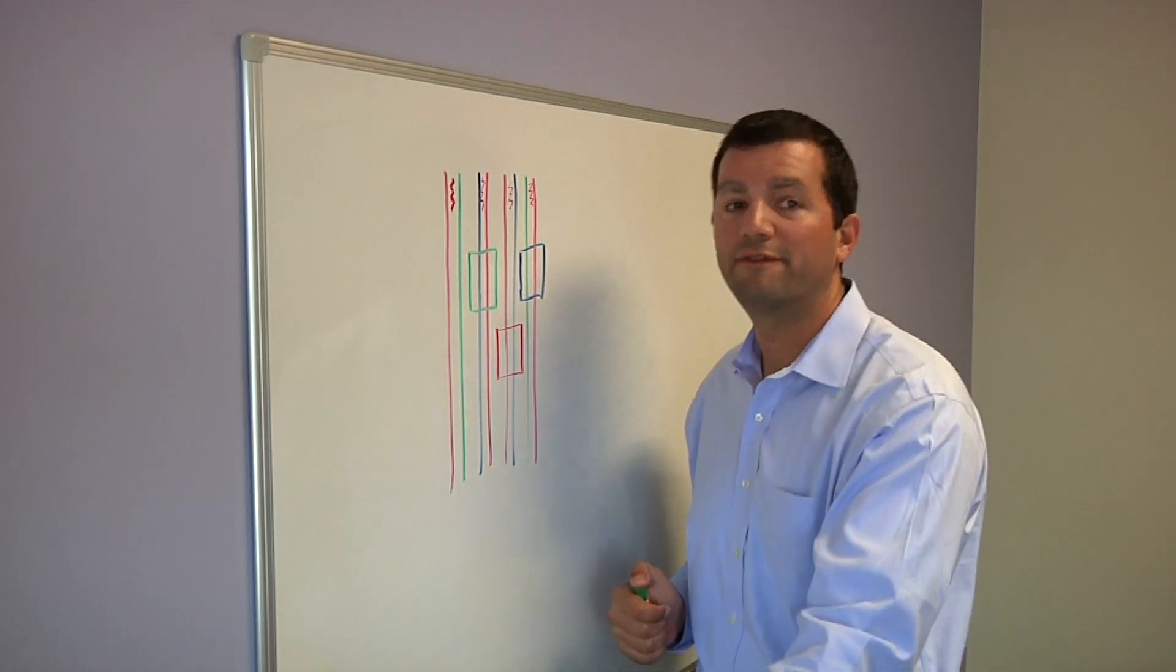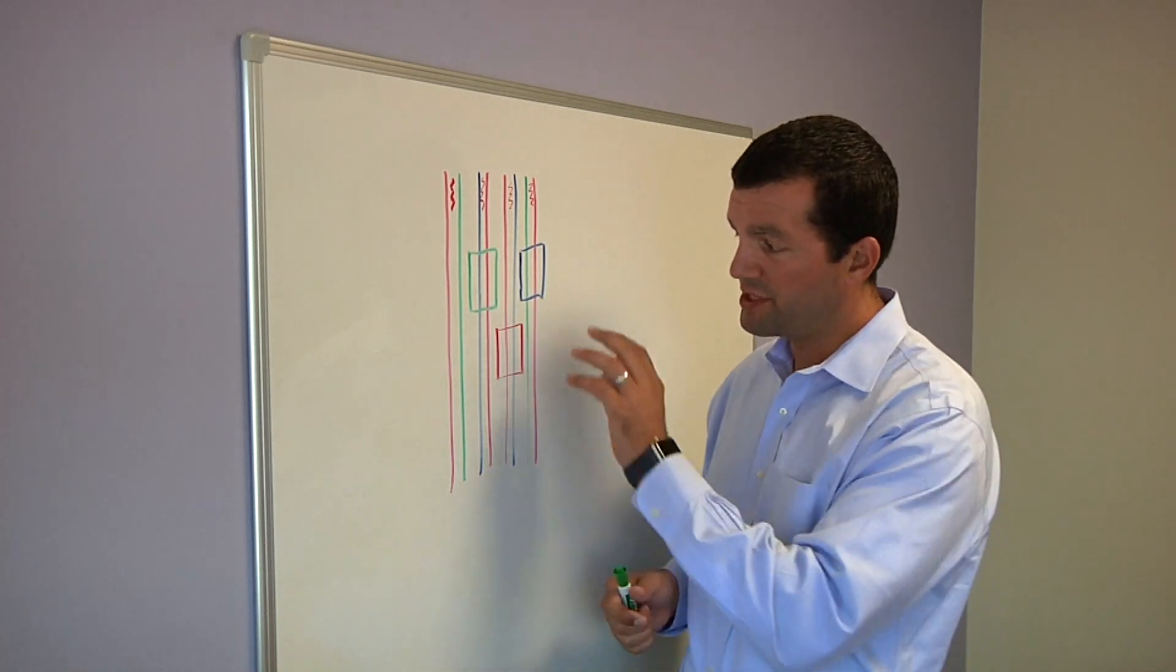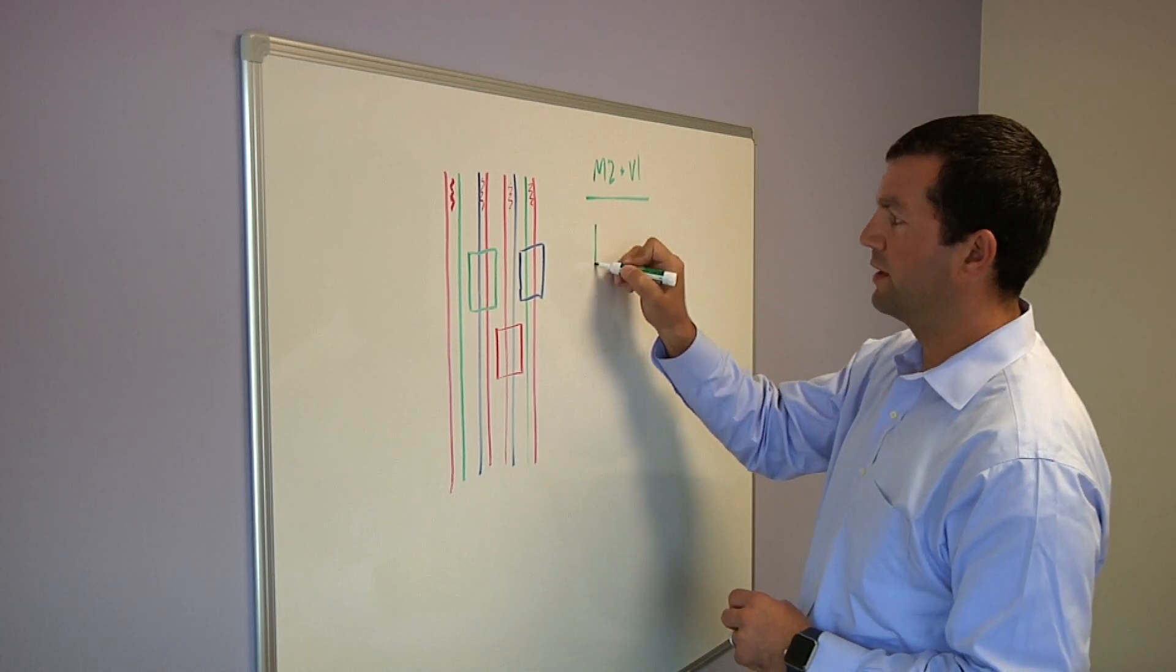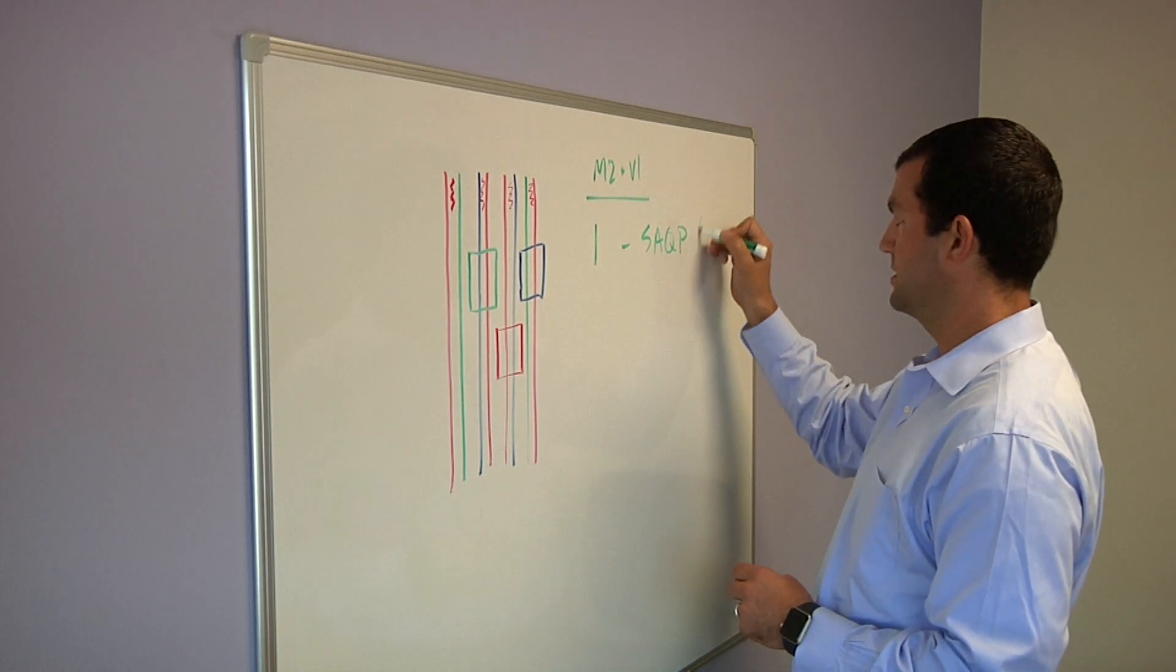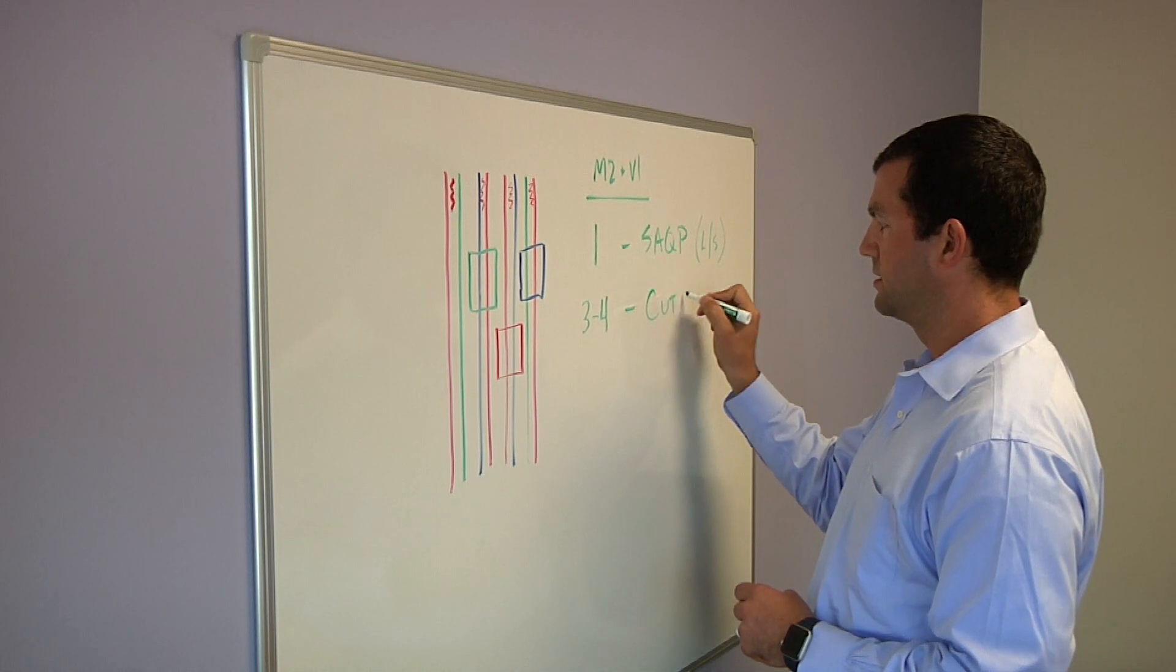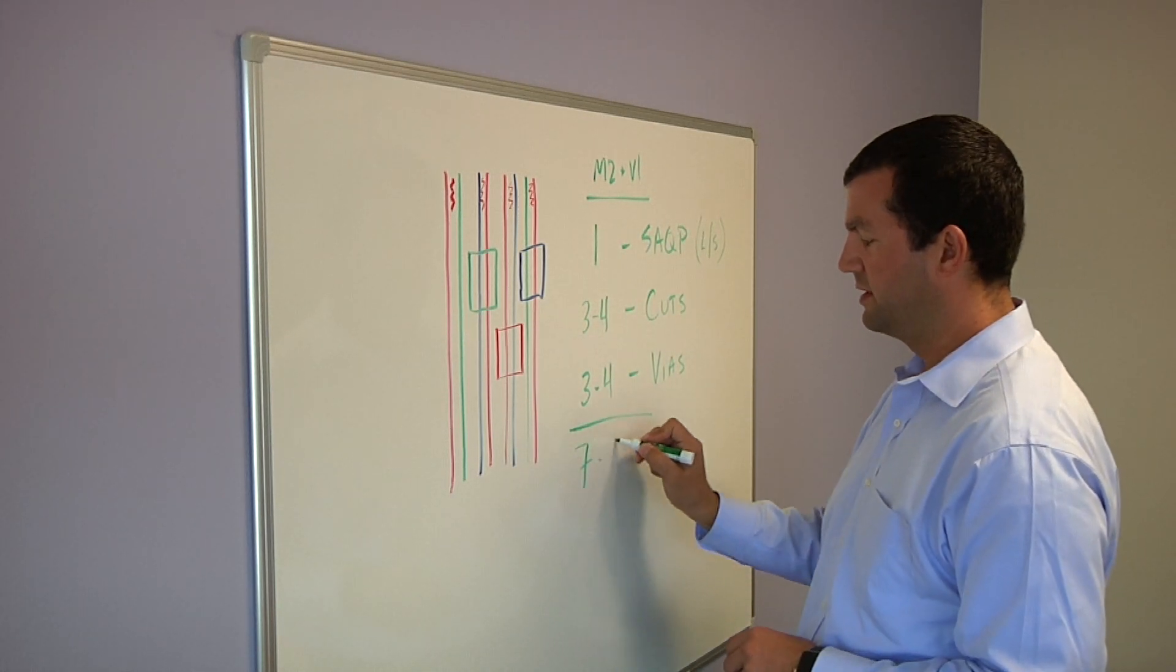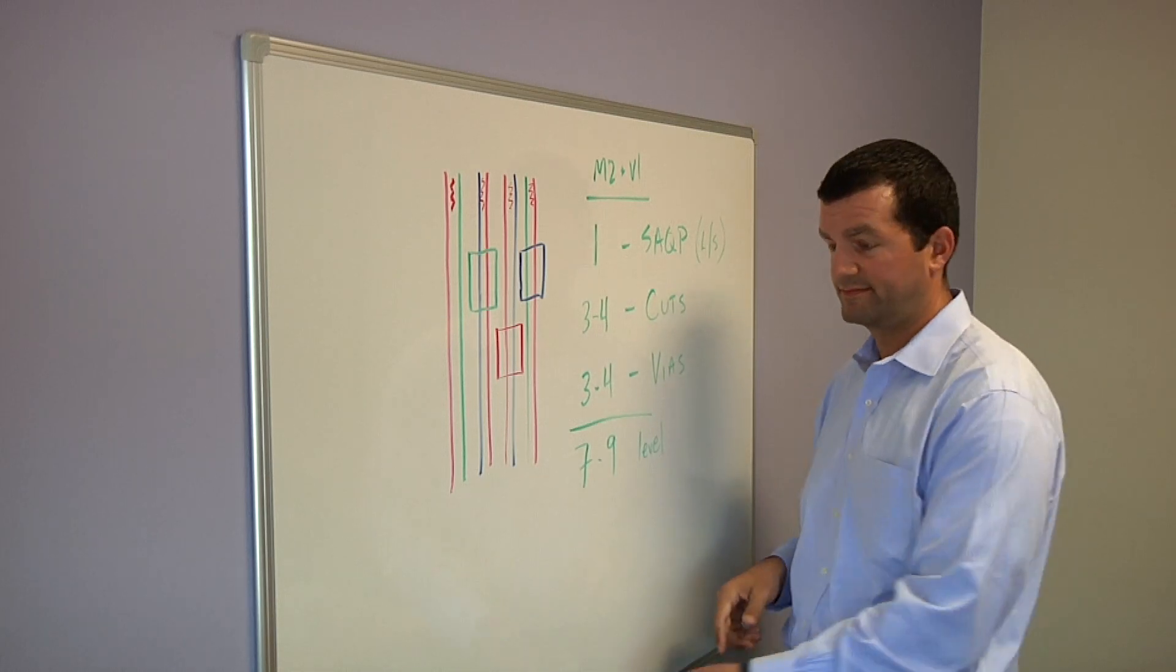This is where a self-aligned quad patterning module actually really starts to get painful. I've done one lithographic step for the lines and spaces, but I have to do three full passes and sometimes a complex patterning module to cut it up. You want to take that one level further. If this is, say, a metal two via one dual damascene module, I have to do a similar type of lithographic technique for all the vias. Okay, so just drawing this out, for metal two plus via one, I have one lithographic step to initiate the self-aligned quad patterning. This is the lines and spaces. I have three to four steps to do cuts, and I can have three to four steps to do vias. This is a single dual damascene module, and this could be seven to nine levels, lithographically and with complex integration through the whole thing.